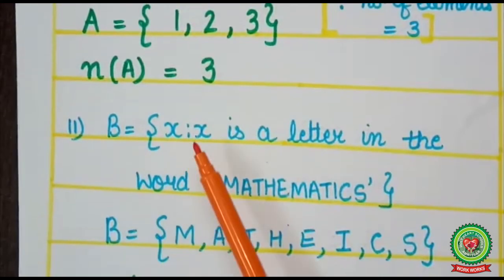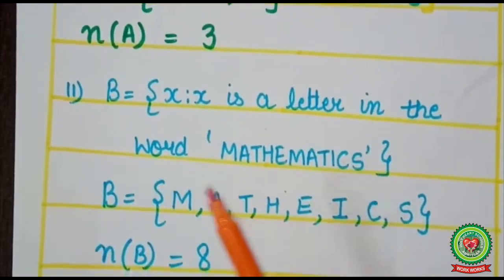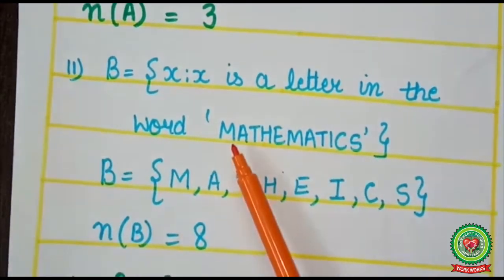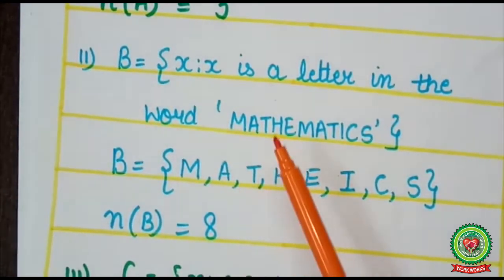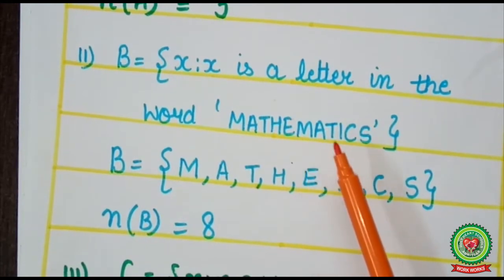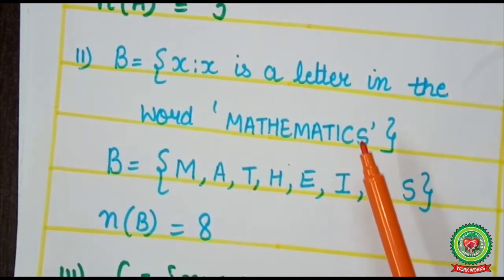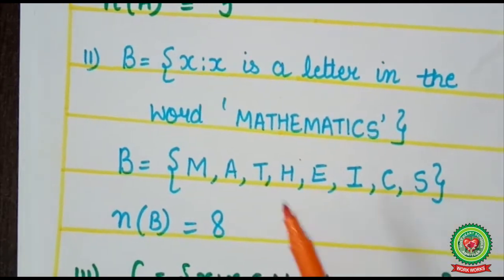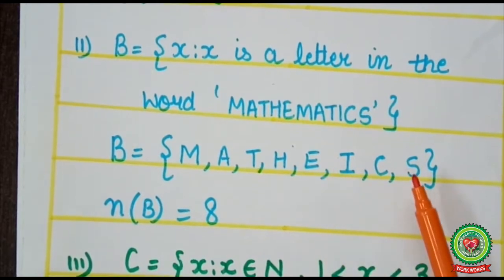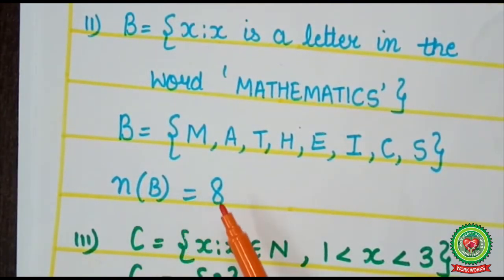Let B be the set where x is a letter in the word 'mathematics'. First, I will write it in roster form. The letters are M, A, T, H, E — I will not write M, A, T again because we do not write repeated elements. The next elements are I, C, S. Counting the elements: 1, 2, 3, 4, 5, 6, 7, 8. So the cardinal number of B is 8, that is n(B) = 8.